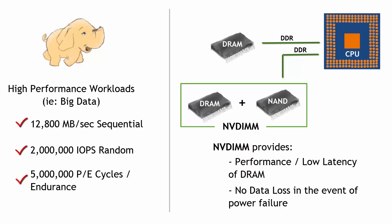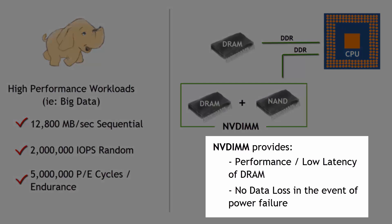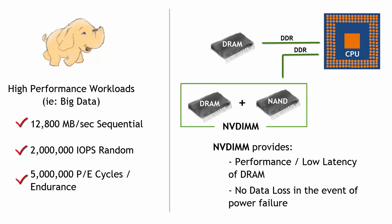So let's go over the two key points here. One is DRAM provides that low latency and performance that you need. And NAND is there in the event there's a power loss — DRAM can flush its data over to NAND. A battery backup has to be on the server obviously in order for that flush to occur in the event of power loss.